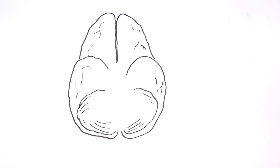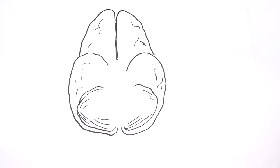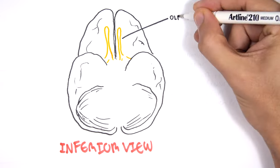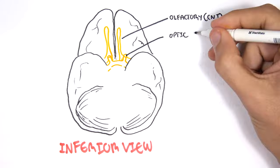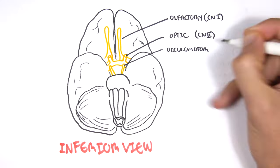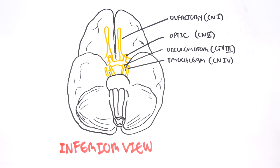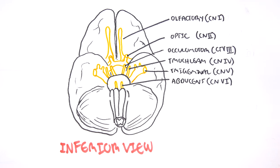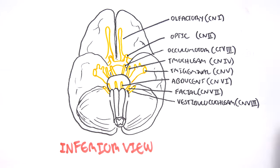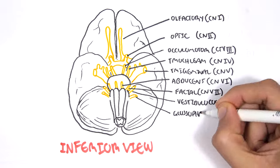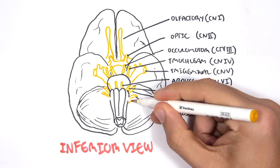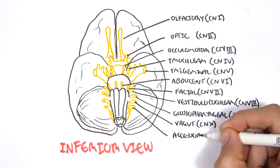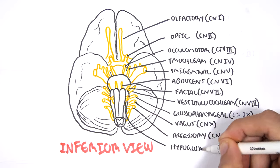Here is the inferior view of the brain. We're looking at the olfactory nerve, cranial nerve number one, the optic nerve. Here is your oculomotor, number three, number four is your trochlear, five is trigeminal, six is your abducens, seven is your facial, eight is your vestibulocochlear nerve, nine is your glossopharyngeal nerve, ten is your vagus nerve, eleven is your accessory nerve and twelve is your hypoglossal nerve.